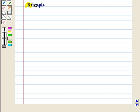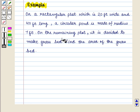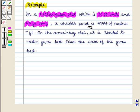Now let us consider one more example where we will adopt a different strategy to find the solution. We first read and understand the problem. It is given that on a rectangular plot which is 20 feet wide and 40 feet long, a circular pond is made of radius 7 feet. On the remaining plot, it is decided to make a grass bed and we have to find the area of the grass bed.